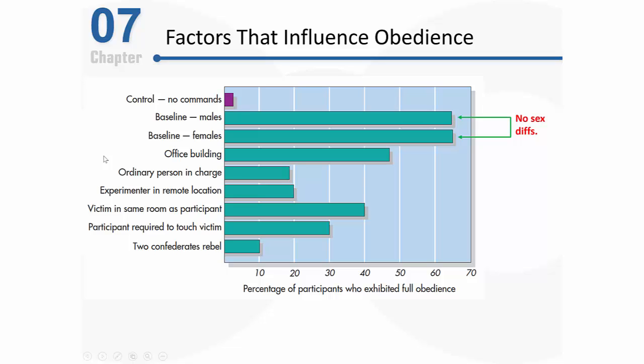Milgram found that destructive obedience required the physical presence of a prestigious authority figure. In one variation, he moved the study from Yale University — which is very prestigious — to a building in the suburbs. When volunteers arrived, they no longer associated that atmosphere with Yale, so the experimenter didn't carry the same level of prestige. In that situation, obedience rates dropped considerably to just 48 percent.